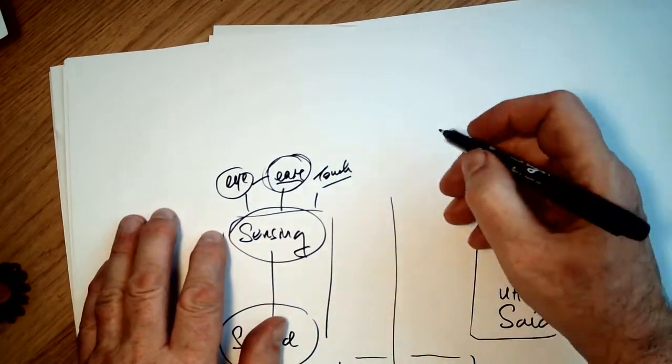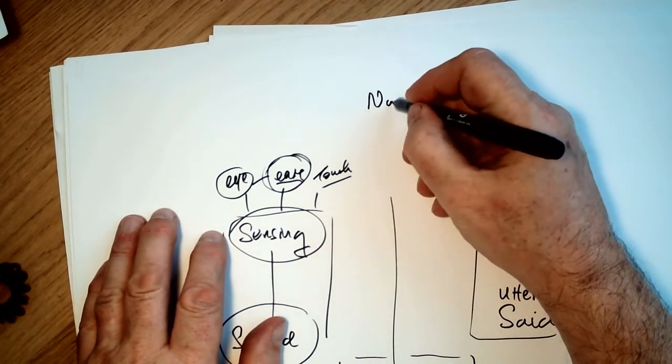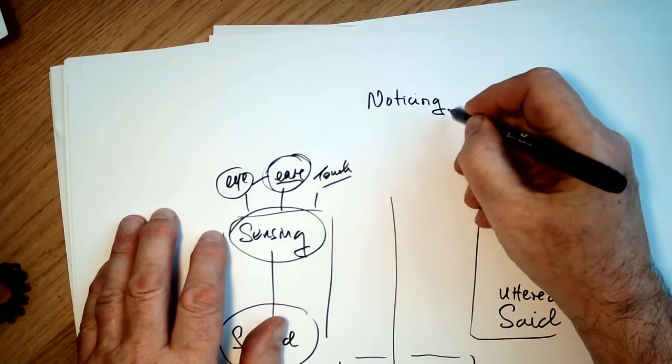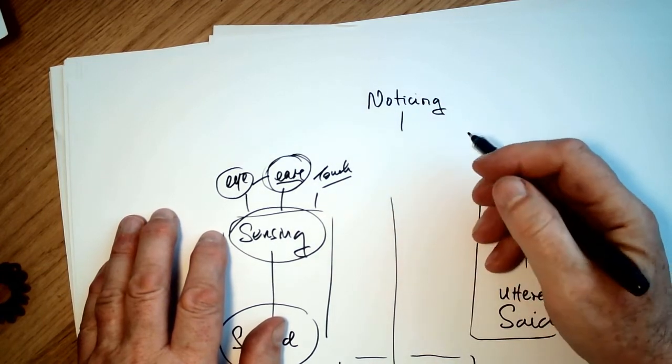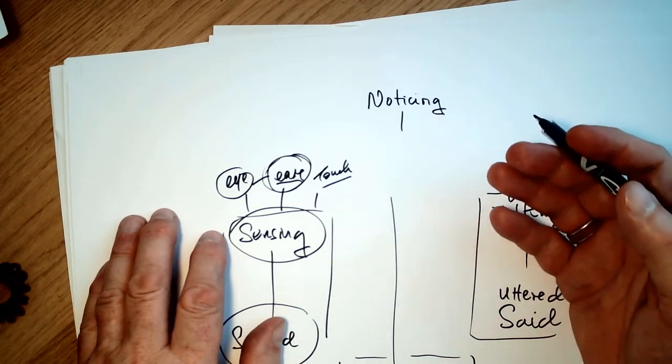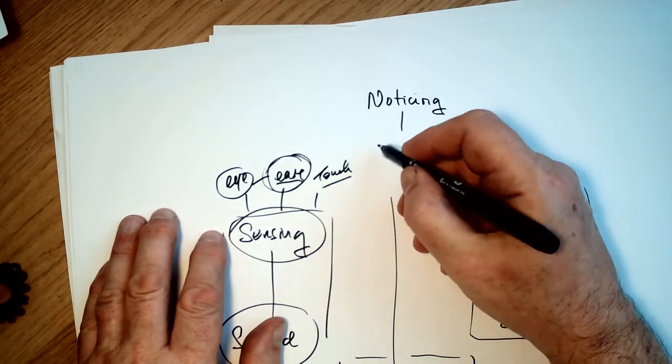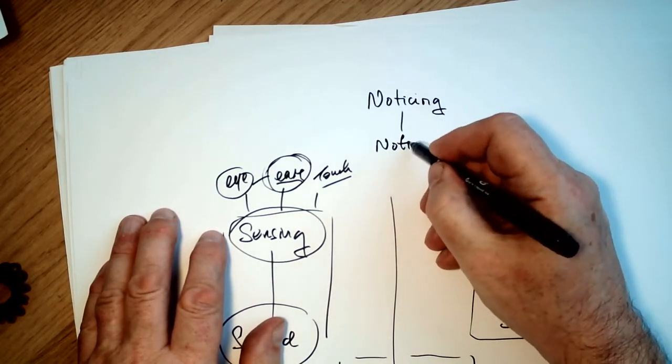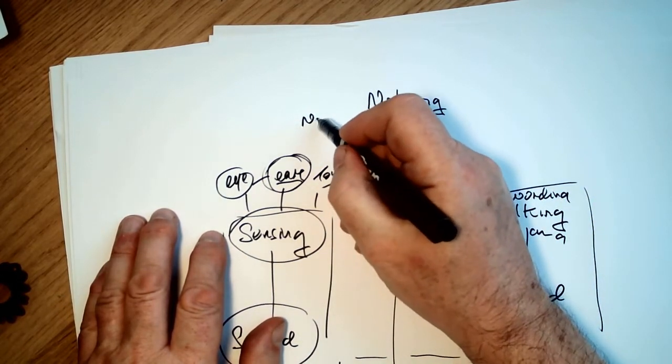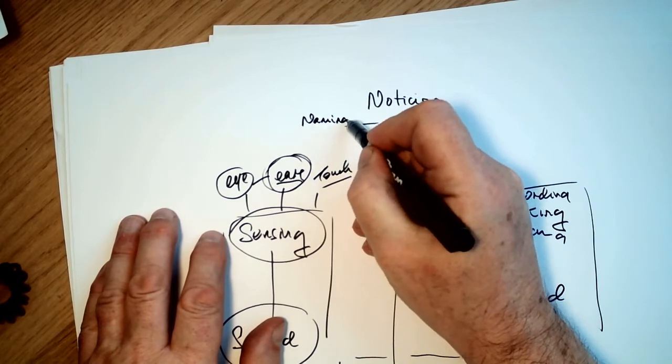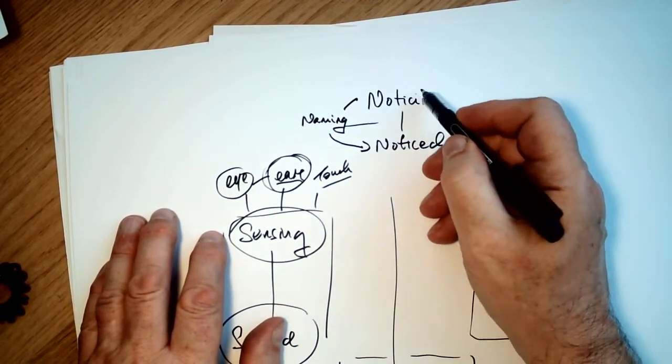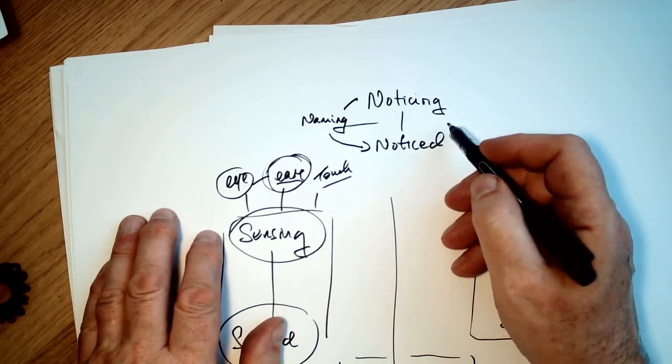And this involves noticing how we're feeling about what we're saying and having an open interchange between the saying and the sensing. And as it's noticed, one of the markers of noticing is naming. What are the words we find for the process of noticing to noticed.